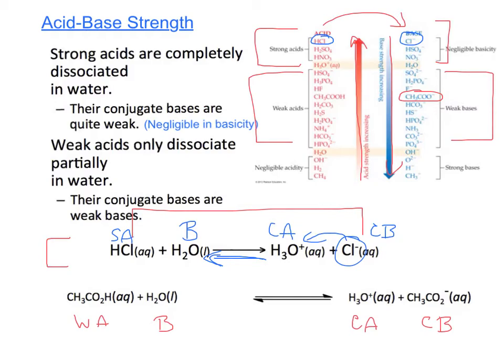H3O plus is my conjugate acid and this acetate ion is my conjugate base. Acetate is right here on this chart and acetic acid is right across from it.